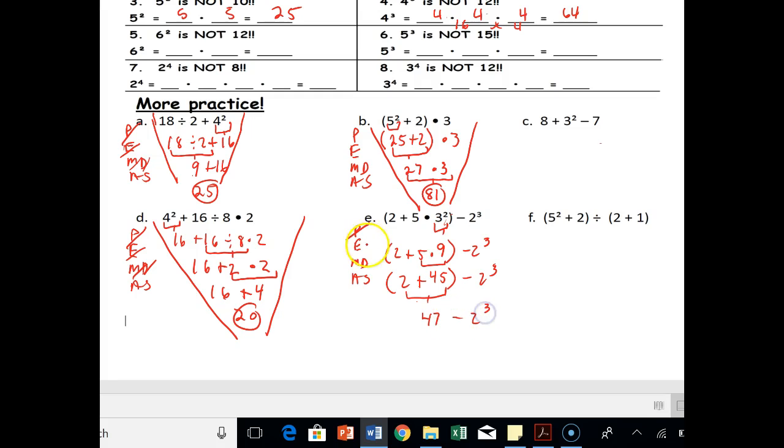Minus 2 cubed. Now I want to do that other exponent, which is 2 cubed. So remember, this is 2 times 2 times 2, which is not 6. 2 times 2 is 4, and 4 times 2 is 8. So 8. So I've got 47 minus 8, and that finishes off with my answer being 39. So look at this beautiful-looking V that we've got going on here after all that work.